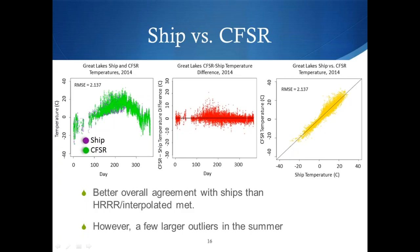Regarding the summer bias and whether latent heat on the ship could affect the observations: I haven't thought about that, but I guess it's possible the ships could be heating up more. I'm not sure if they have a way to correct for that. If they're using standard meteorological equipment, it might be similar to summertime on land where you'd aspirate sensors to prevent that, but I'm not really sure what they do on the ships.